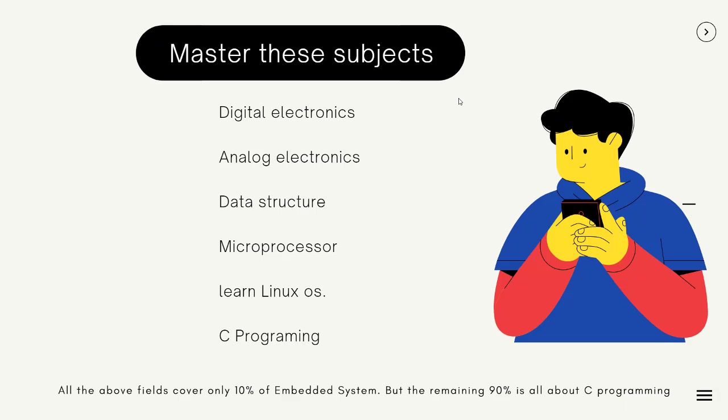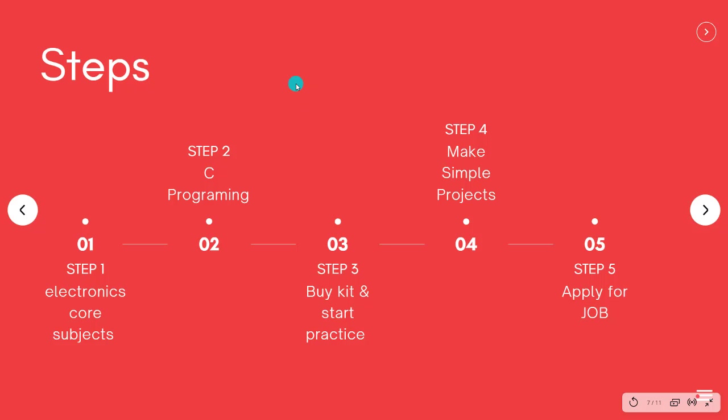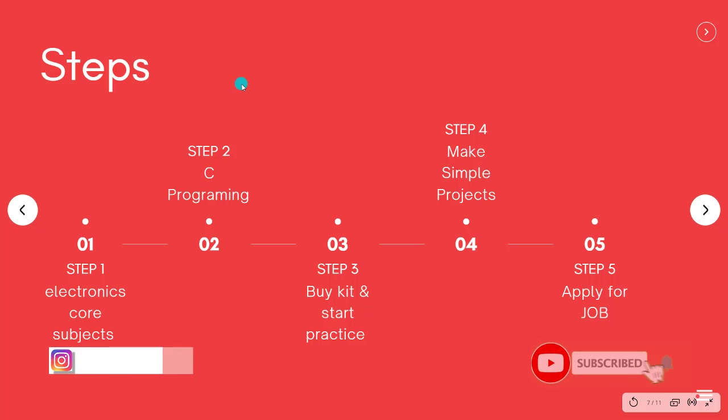To get a job in embedded systems or to become an embedded engineer, you have to master several subjects: digital electronics, analog electronics, data structures, microprocessors, and Linux OS. Most companies work on Unix/Linux OS because it is more secure and powerful than Windows. Most importantly, you have to learn C programming as well as C++. These subjects are only 10% of embedded systems — the remaining 90% is C and C++ programming, so you must master both.